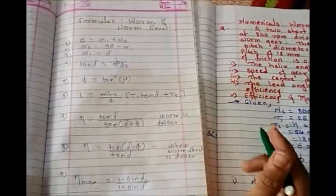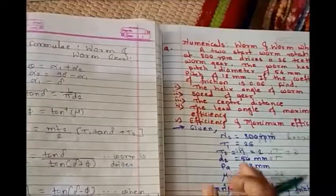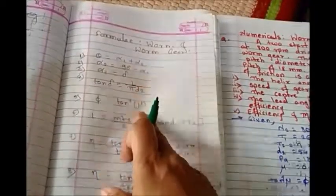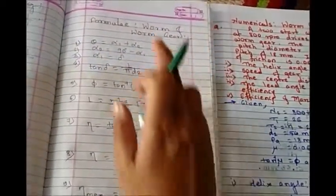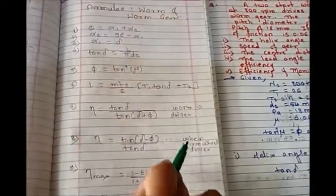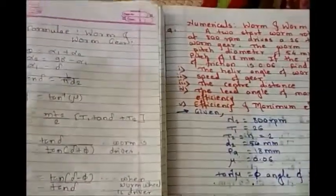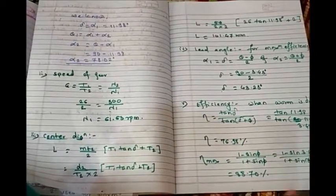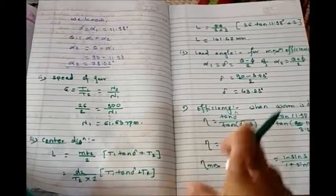So this is all about how to solve the numerical based on worm and worm wheel. The important part of this numerical is you need to know the different formulas based on worm and worm wheel. If you know the formulas, you can solve any kind of numerical on worm and worm wheel. I hope you understand how to solve the numerical based on it. Thank you for watching.